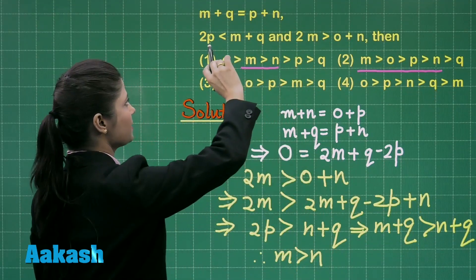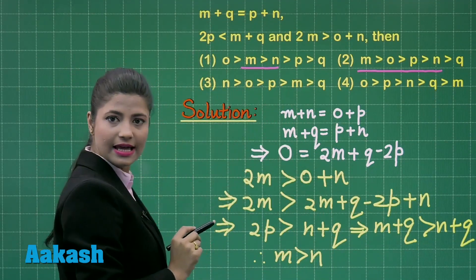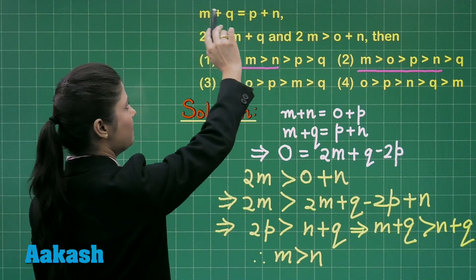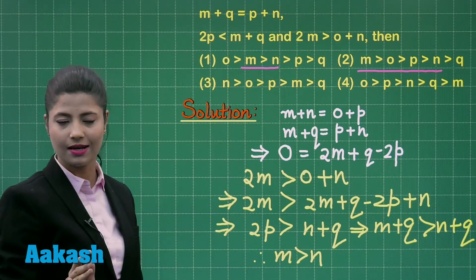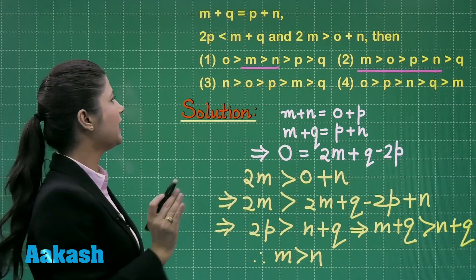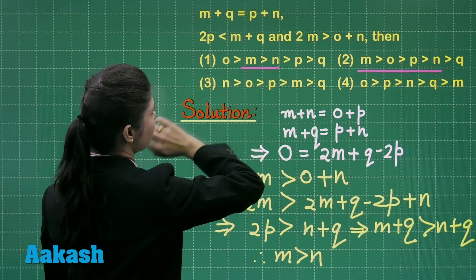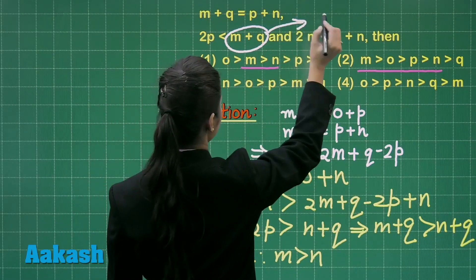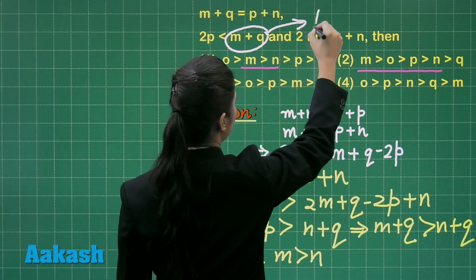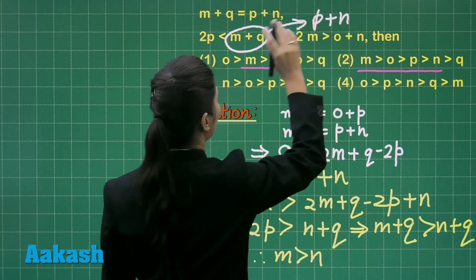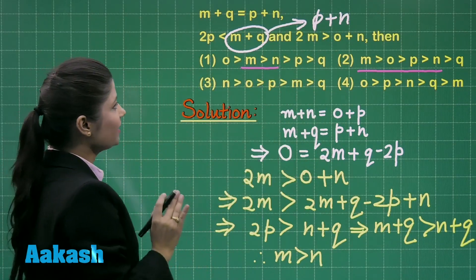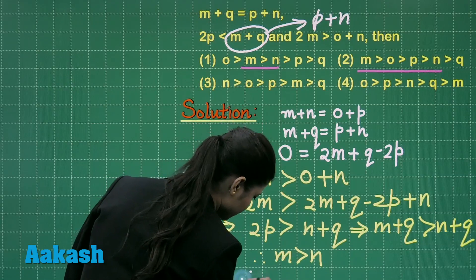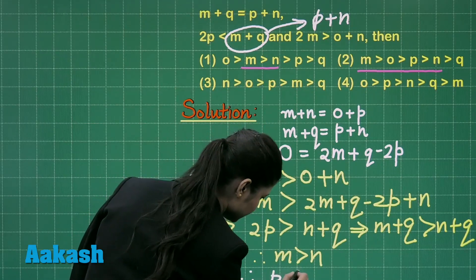Now let us come to the inequality 2P is less than M plus Q. Since M plus Q can be replaced by P plus N, substituting this gives the relationship that P is less than N.